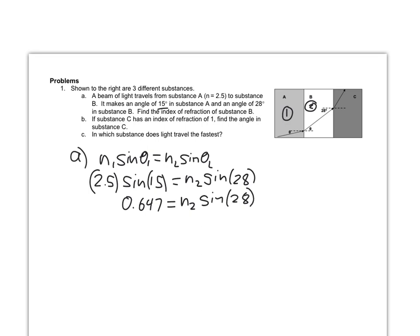I'm going to divide both sides by sine of 28. Sine of 28 is just a number, so dividing both sides by it makes it go away on one side. We solve for N2, and we find that N2 is going to be equal to 1.38.